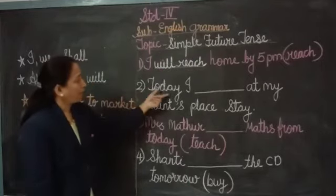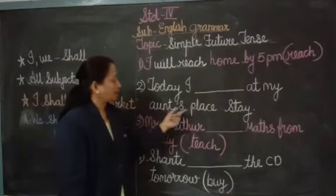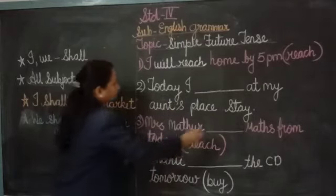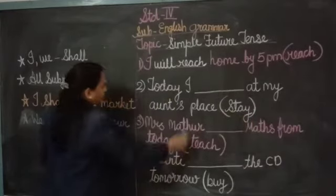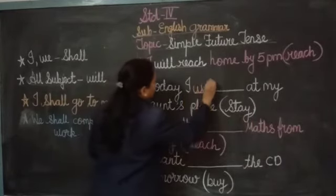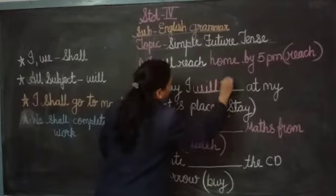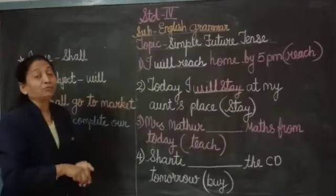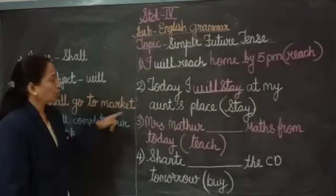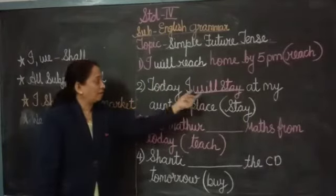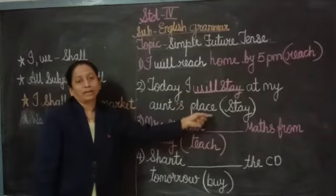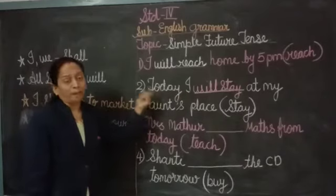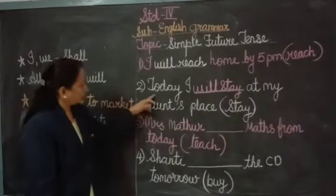The next one: 'Today I dash at my aunt's place' — the word is 'stay'. You are going to stay at your aunt's place in the future — you have not gone yet. So we write: 'I will stay at my aunt's place.' Today, tomorrow, day after tomorrow, or after one month — we are talking about a future event, so we always use 'will'.